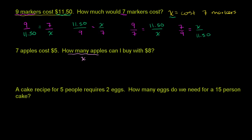So seven apples cost $5. We have the ratio between the number of apples — seven — and the cost of the apples — five — is going to be equal to the ratio between another number of apples, which is now x, and the cost of that other number of apples, which is $8. Notice here, in this first situation what was unknown was the cost, so we had number of apples to cost, number of apples to cost. Now in this example, the unknown is the number of apples.